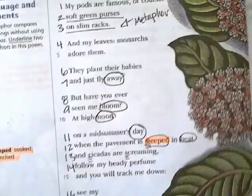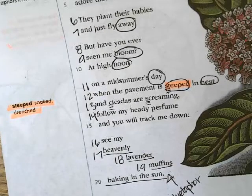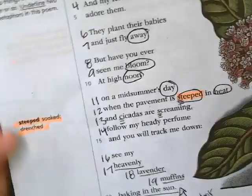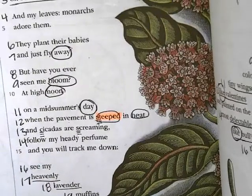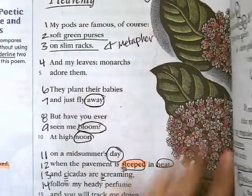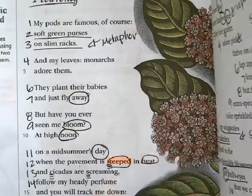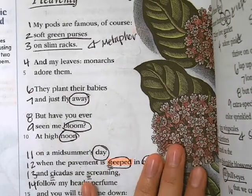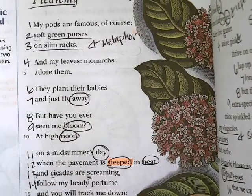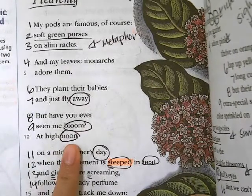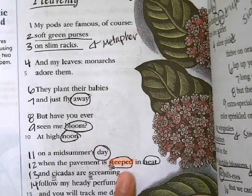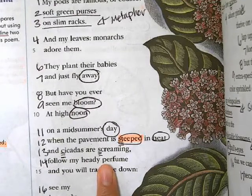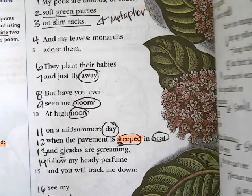Then we also see the other metaphor: 'See my heavenly lavender muffins baking in the sun.' In reality, it is also just a comparison because there aren't really any muffins baking — it's just showing how they could be like them, how it looks kind of like them. And then we have our rhyming words as well and alliteration here. We have 'steeped,' 'cicadas,' and 'screaming.' So we went over that.